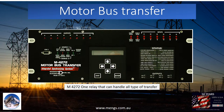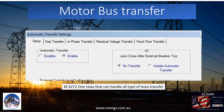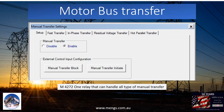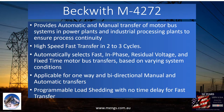The Beckwith M4272 is an advanced motor bus transfer relay. It provides very fast sync check of less than 10 milliseconds. The Beckwith M4272 can handle all types of auto transfer: fast transfer, in-phase transfer, residual transfer, and dead transfer. It can also provide manual transfer. Make-before-break, or hot paralleling, is a feature that may be required for seamless manual transfer. The M4272 provides automatic and manual transfer of motor bus systems in power plants and industrial processing plants to ensure process continuity.